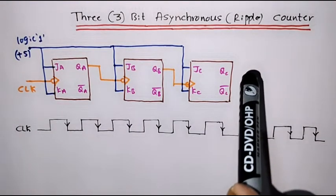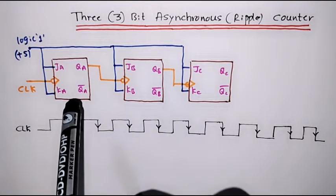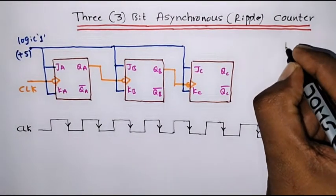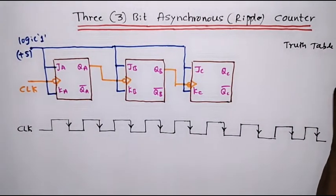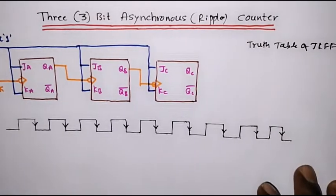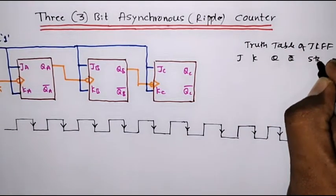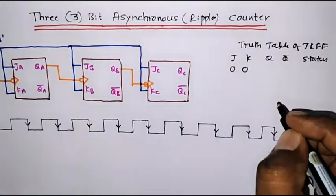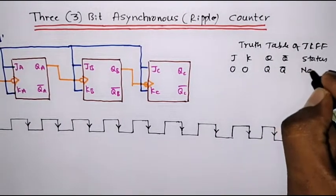For counter applications, we usually prefer using either JK flip-flop or T flip-flop because of its toggling nature. Before studying this, we will study the truth table of JK flip-flop. In JK flip-flop, when both inputs are 0, 0, the output is no change — that is, Q and Q-bar remain the same.